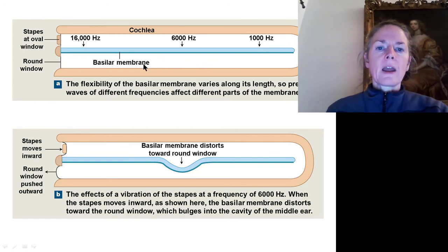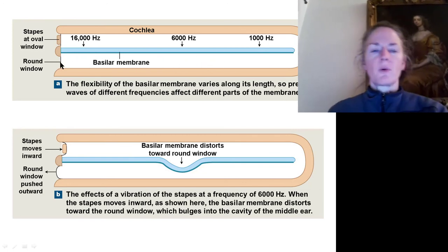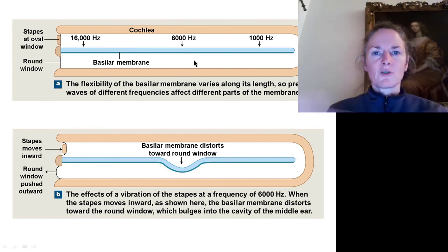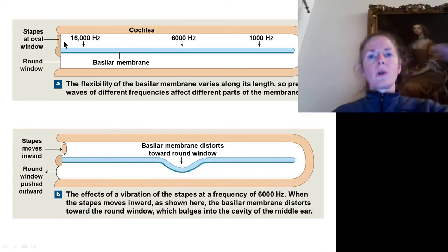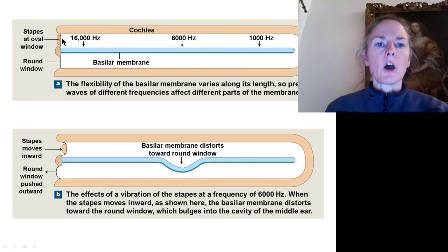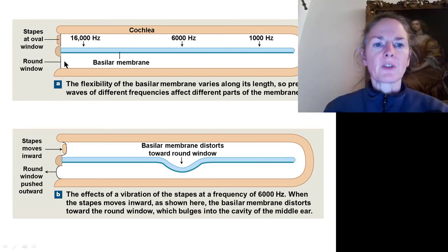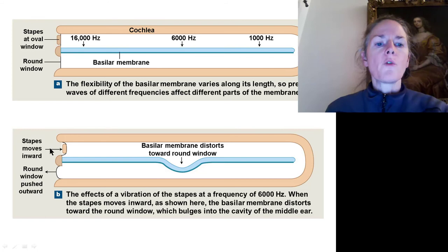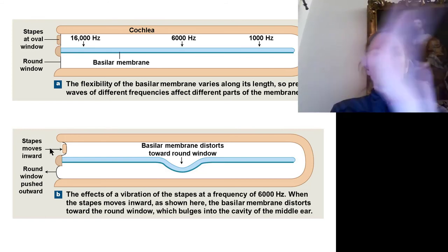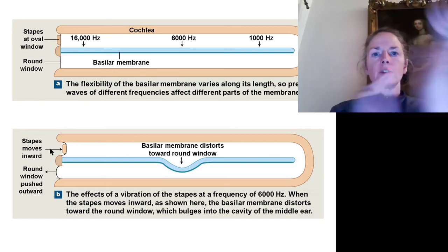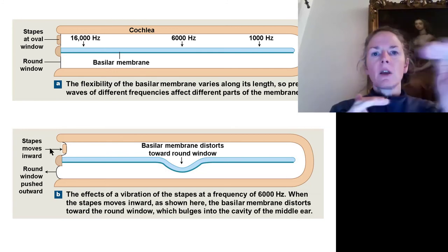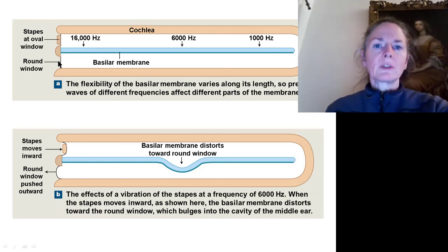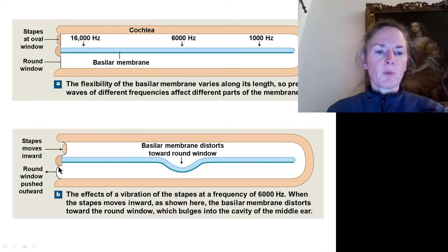The sound pressure wave continues on to the round window. Because the fluid is non-compressible, when we push in at the oval window the round window bulges out, and when the oval window pulls back the round window bulges in. That is why we have the round window — to relieve pressure on the other end. This shows the opposite as well: the oval window moving out as the stapes pulls back, and the round window being pulled toward the inside of the scala tympani.